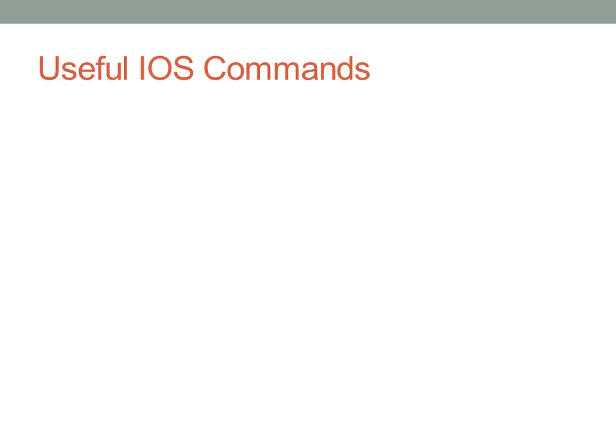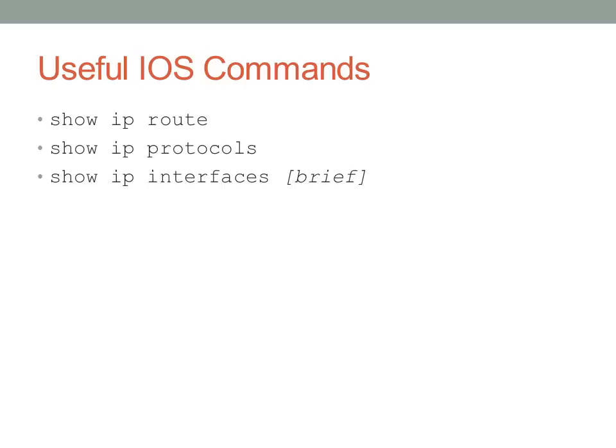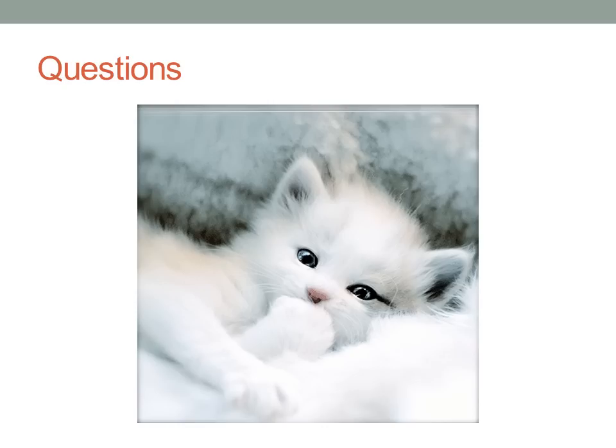Here are some useful IOS commands. 'Show ip route' is useful with every routing protocol we'll discuss. 'Show ip protocols' lets you determine if RIP is running. 'Show ip interfaces brief' is very useful to see what interfaces are running and their subnet masks. And 'debug ip rip' lets you see RIP informational messages on the command prompt.